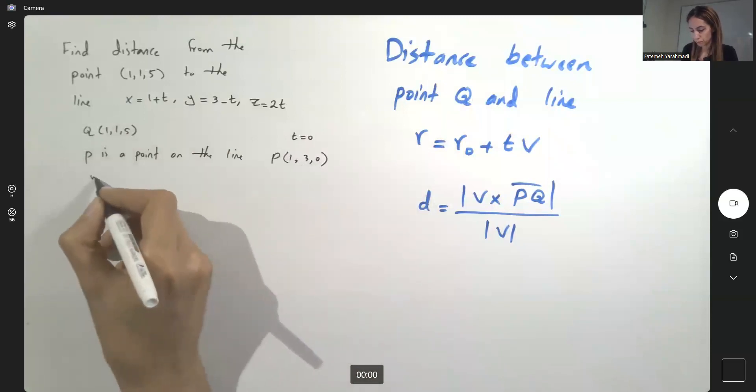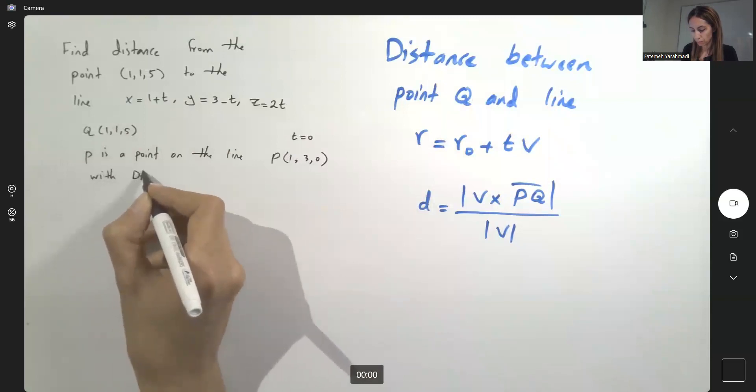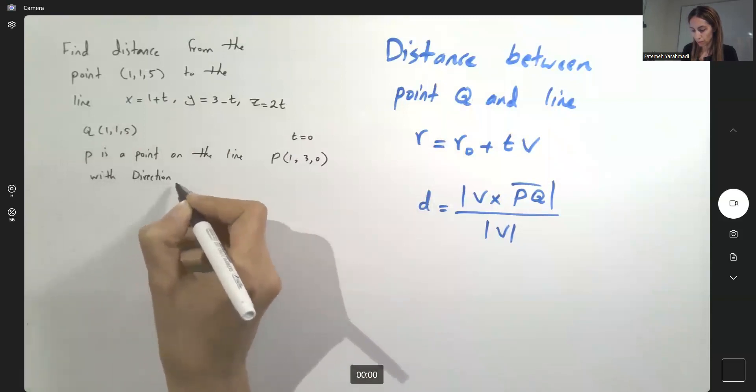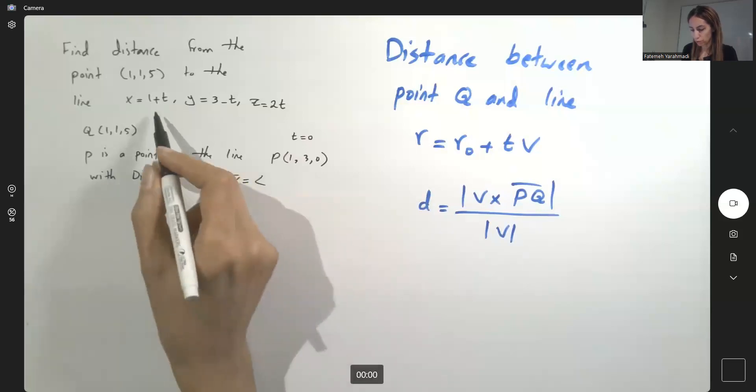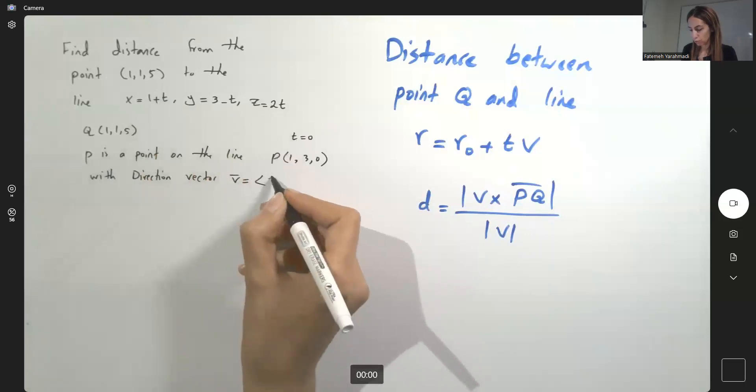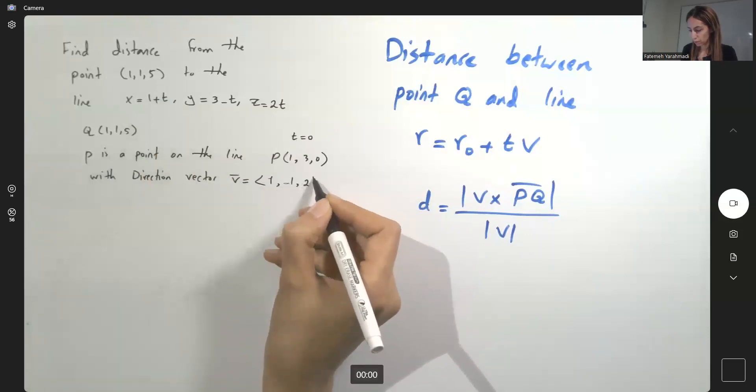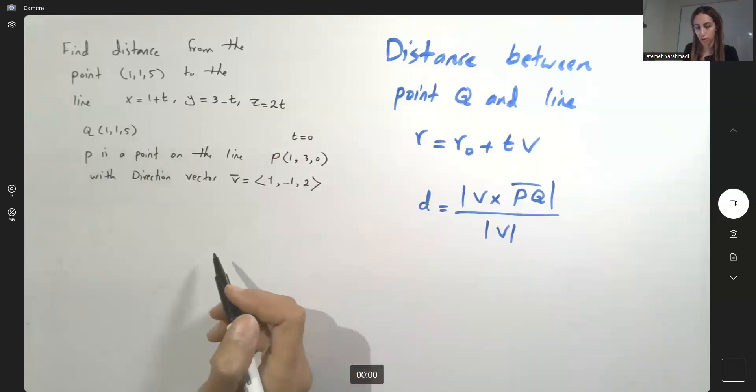The direction vector V is equal to the coefficient of T in each scenario: 1, negative 1 and 2. So let us follow the formula.